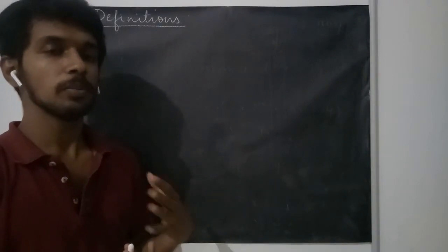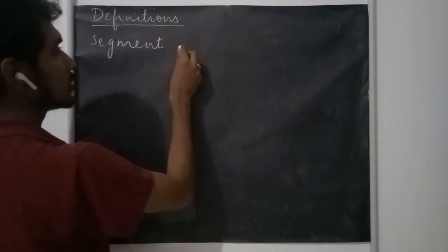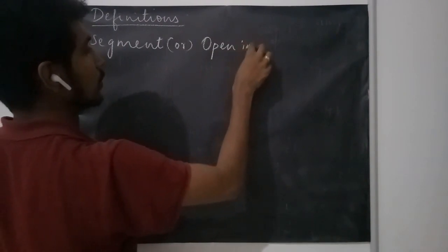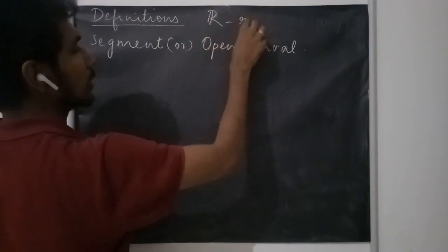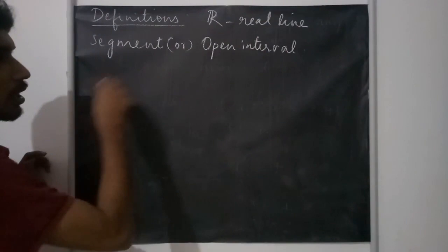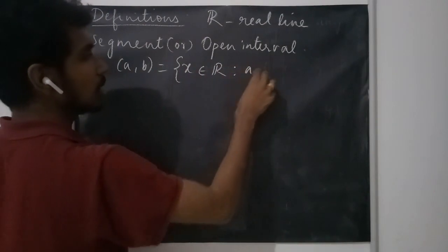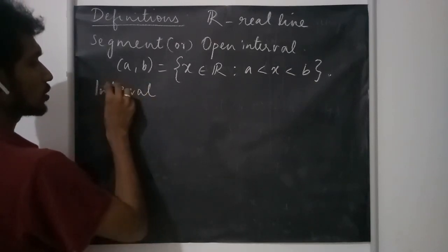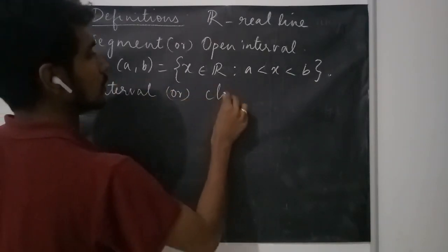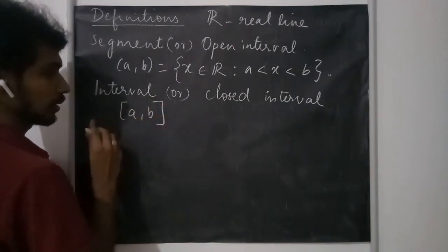Welcome. In this lecture we are going to see some definitions that are to be used throughout the course. The first definition is segment — R is also called as open interval. We are defining these things on the real line. An open interval (a,b) is the set of all real numbers satisfying a < x < b. Next, an interval generally refers to the closed interval, denoted [a,b].